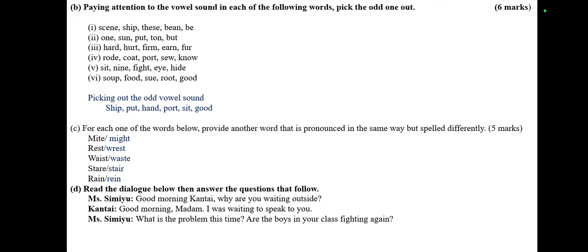Part B: paying attention to the vowel sound in each of the following words, pick the odd one out. The sets are: scene, ship, these, bean; one, sun, put, ton, but; had, farm, and fur; road, court, port, sue, and no; sit, nine, fight, eye, and hide; soup, food, sue, root, good. Good learners, you'd love to pause at this particular part and do what I'm doing — articulate these particular words and see which words are sounding differently from the others.